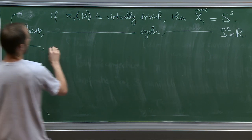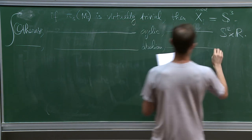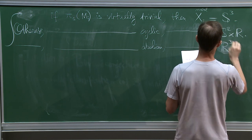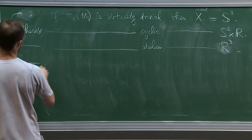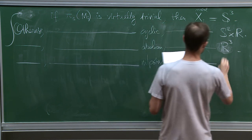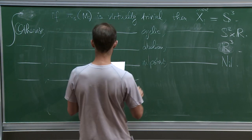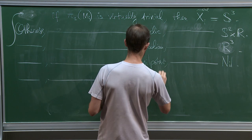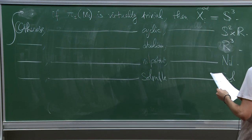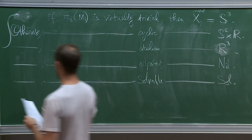Otherwise, if pi1 of M_i is virtually cyclic, then the model has to be S2 cross R. Do you mean pi1 of M_i? Pi1 of M_i, thank you. The corresponding model is called X_i. If not, but it is still virtually abelian, then we are dealing with Euclidean geometry. If not, but we are still virtually solvable, then it has to be Sol geometry.